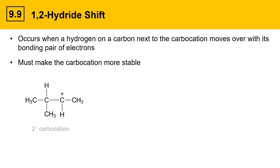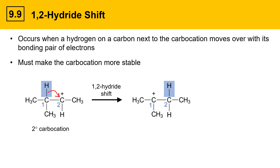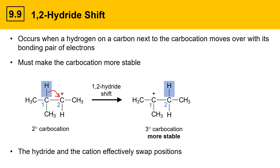Here's an example with a secondary carbocation. We look at the carbocation carbon, we look next door, and here I'm going to identify a hydrogen on the neighboring carbon with a blue highlight. I'll label that carbon 1 and the carbocation 2, and if that group moves with its bonding pair of electrons, as indicated by that curved arrow, the process is called a 1,2-hydride shift. That produces a new carbocation where the carbocation is now in the 1 position and the hydride is in the 2 position, giving a tertiary carbocation which is more stable. So this is a favorable reaction. The hydride and the cation effectively swap positions in a 1,2-hydride shift.